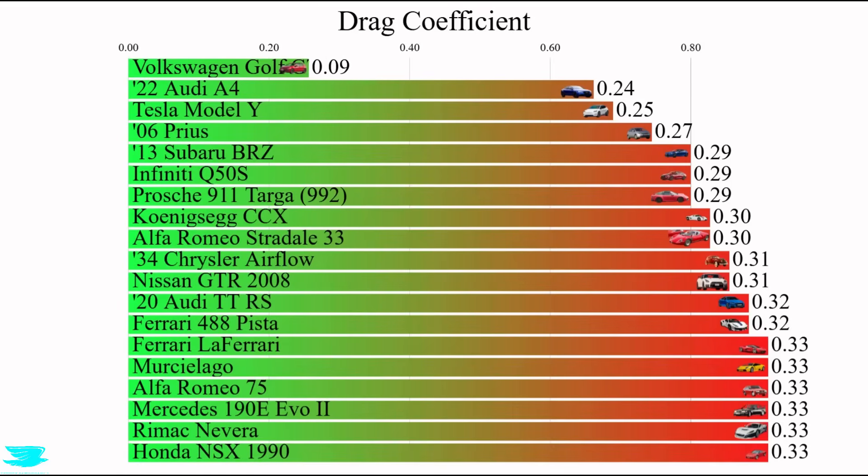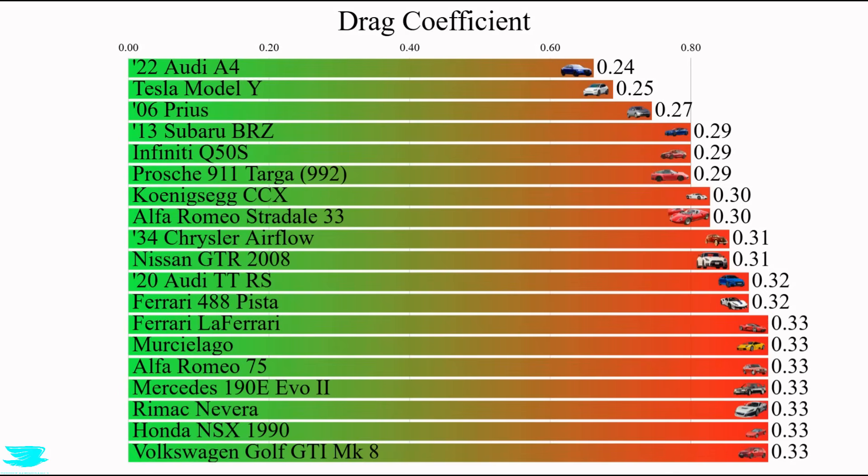With all of these sections, the drag coefficient comes in at 0.33, which isn't great. You can get some supercars with lower drag coefficients, and that number isn't any better than the average hatchback from even 10 years ago.